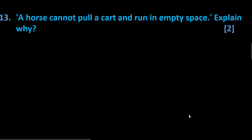Now, a horse cannot pull a cart and run in empty space. Explain why. For this, say, this is a cart. A horse is pulling the cart along this. What we need is normal reaction. So, because of the normal reaction, the horse can move forward. But in empty space: